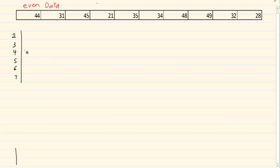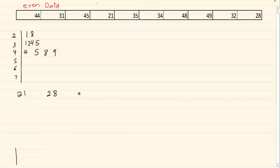Our new dataset is: 44, 31, 45, 21, 35, 34, 48, 49, 32 and 28. If we put our data in order we get: 21, 28, 31, 32, 34, 35, 44, 45, 48, 49. Counting these we have 10 terms.